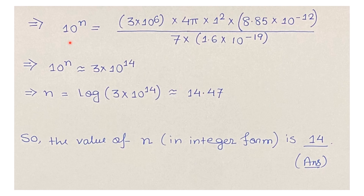Rearranging: 10ⁿ = (3 × 10⁶ × 4π × 1² × 8.85 × 10⁻¹²) / (7 × 1.6 × 10⁻¹⁹). Calculating this gives approximately 10ⁿ ≈ 3 × 10¹⁴.